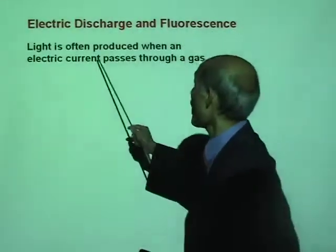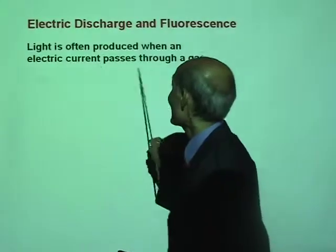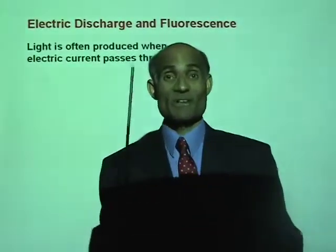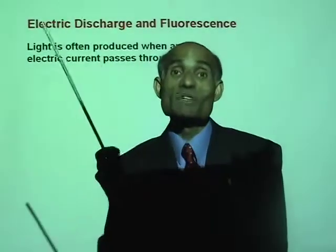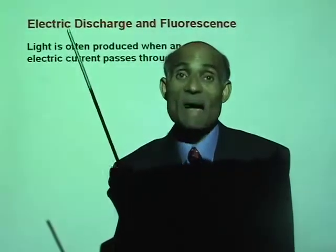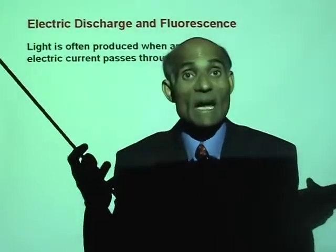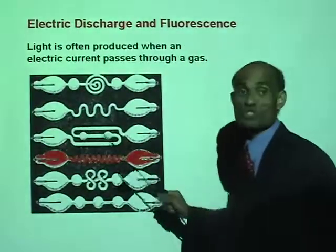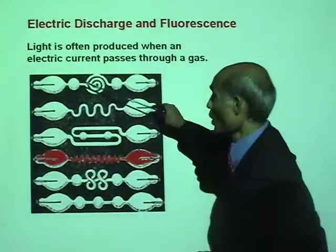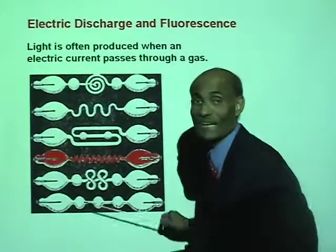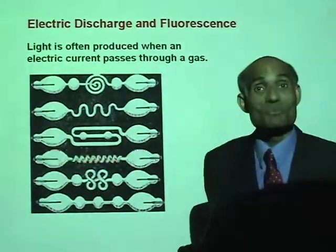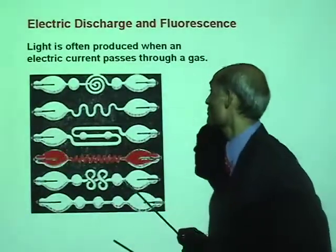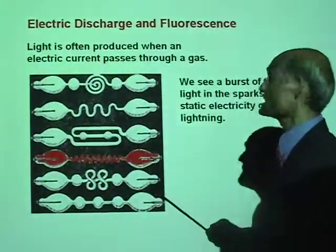Light is often produced when an electric current passes through a gas. When you do that with your car battery, the gas is air. Here I have an example of electric discharge — all these are electric discharge tubes that are used in advertising. I am sure you are familiar with these kinds of things.